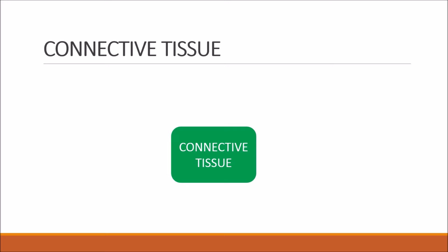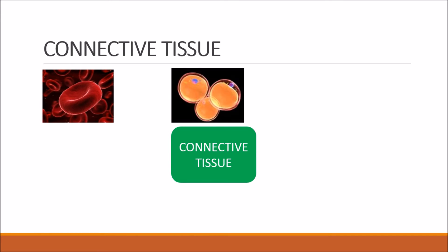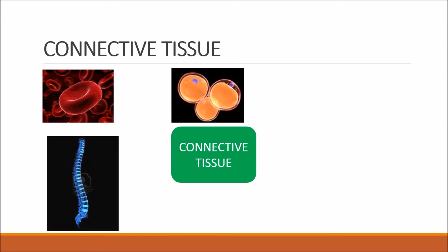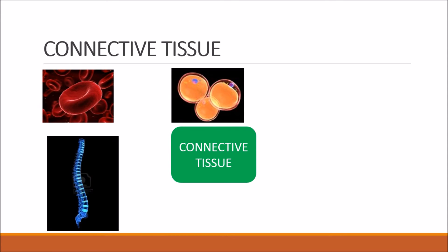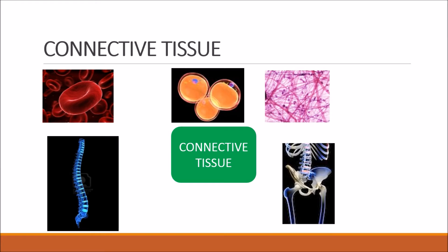A quick question: what are the main five types of connective tissue we can find in the human body? The answers are blood, adipose, cartilage, bone, and regular connective tissue.